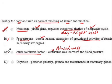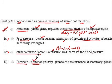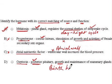Option D has the hormone oxytocin, and the source given is posterior pituitary, which is the correct source. However, the function states growth and maintenance of mammary glands, which is incorrect. Oxytocin is actually known as the birth hormone, and it causes contractions of the uterine muscles which help in parturition, so the function is incorrect here.